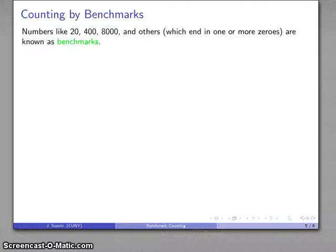Now, a number like twenty, or other numbers like four hundred, or eight thousand, or any number in general that ends in one or more zeros, we refer to these numbers as benchmark numbers.